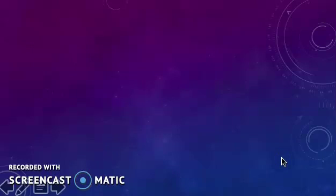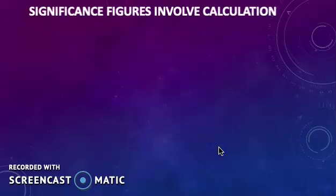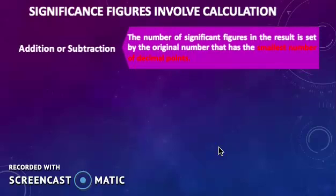Let's move to the second set of rules. A second set of rules specifies how to handle significant figures in mathematical calculations. In addition and subtraction, the number of significant figures in the result is set by the original number that has the smallest number of decimal points.